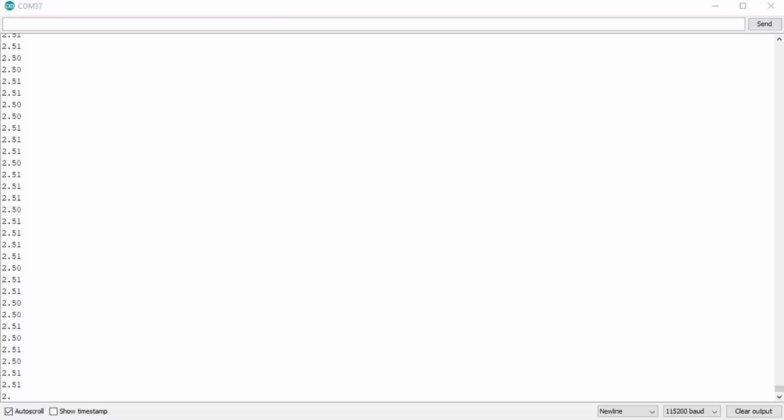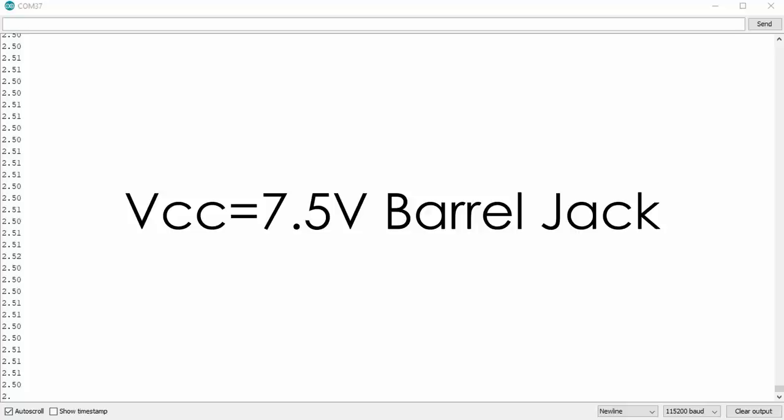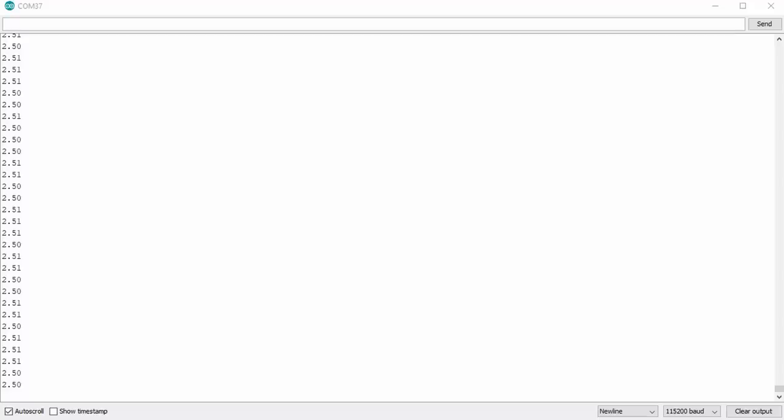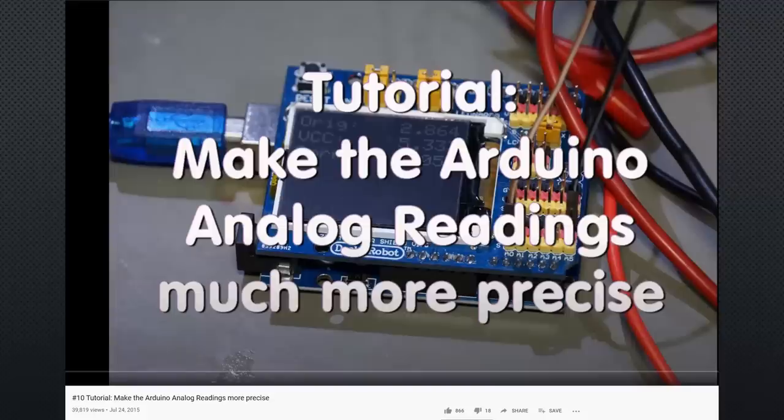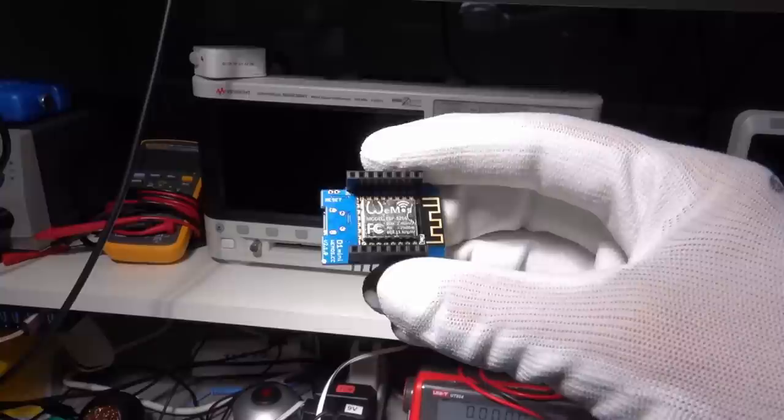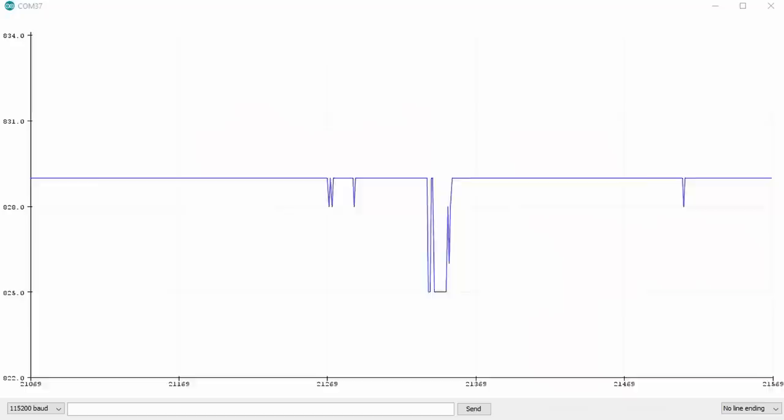But now I increase the supply voltage of the Arduino to 5.2 volts, which is still in the USB specifications. Now it shows only 2.4 volts. At 4.8 volts supply voltage, it shows 2.6 volts. Interesting, but of course, not good. If I power the Arduino with 7.5 volts at the barrel jack, we get quite constant 2.51 volts. So either you power your Arduino at precisely 5 volts, or you watch video number 10, where I show how you can use the internal reference to stabilize these values.